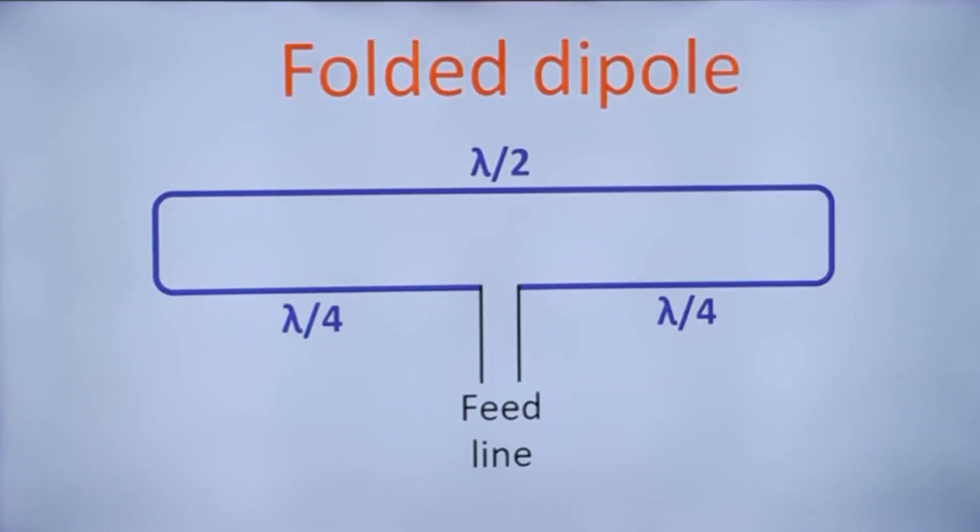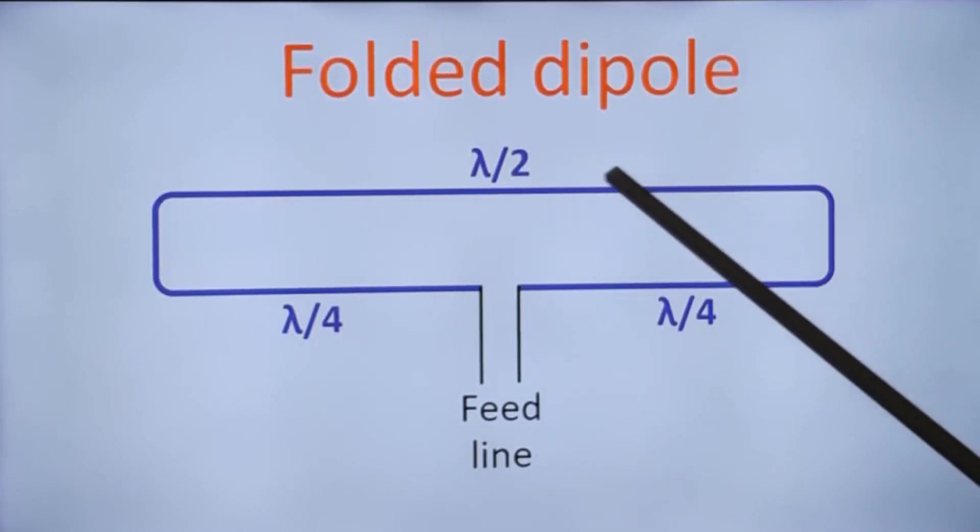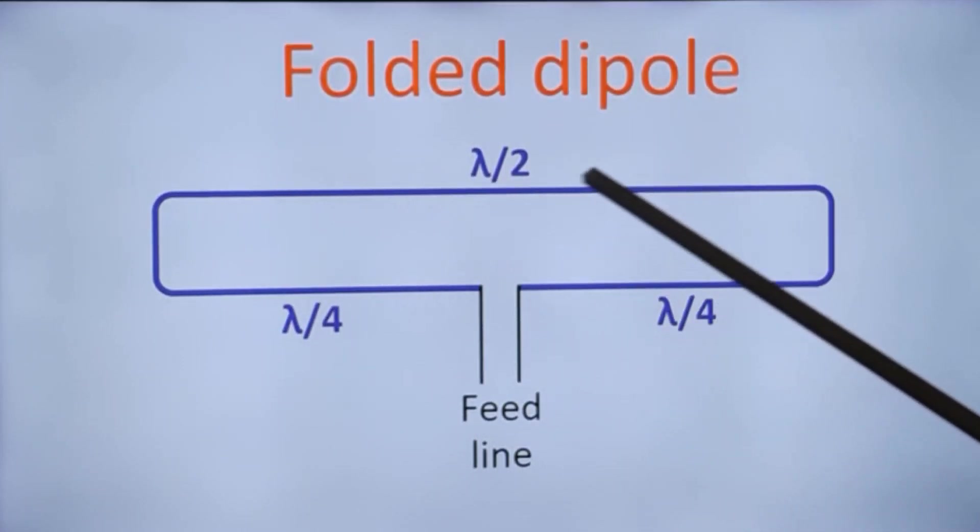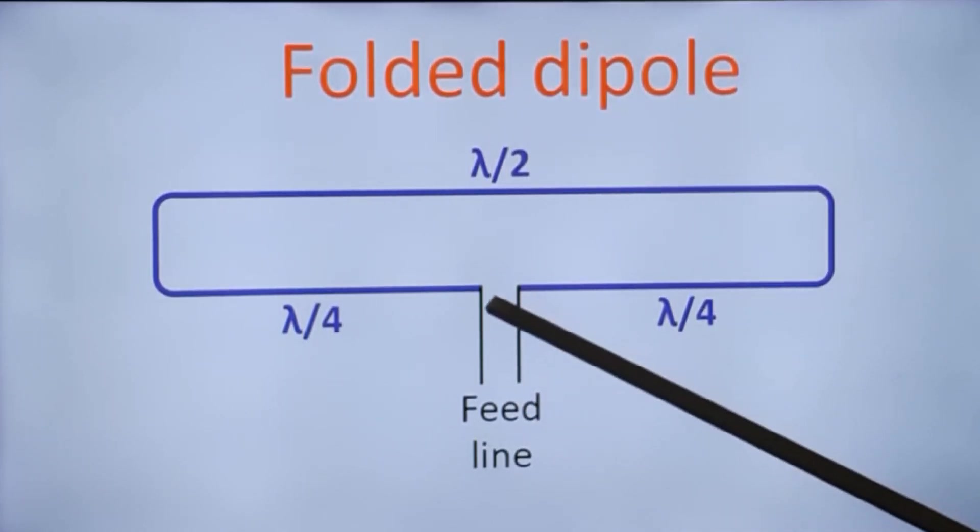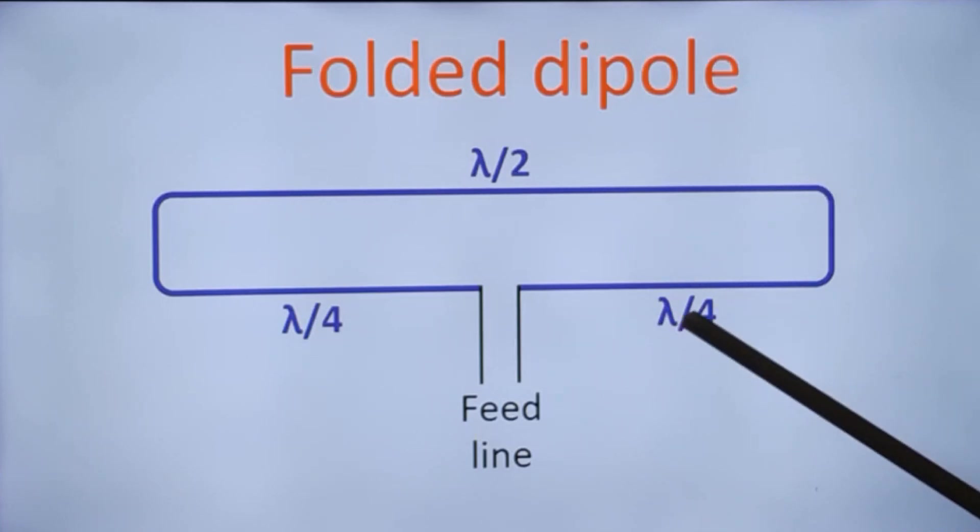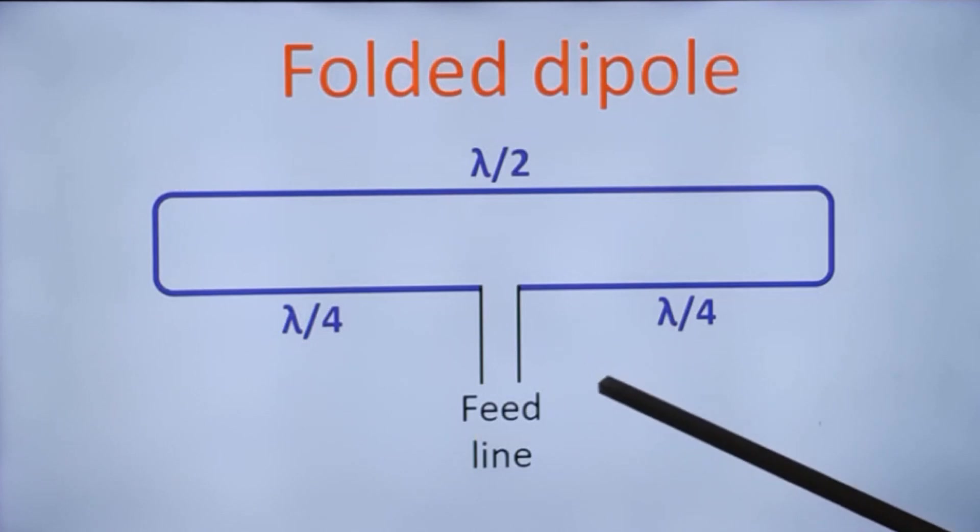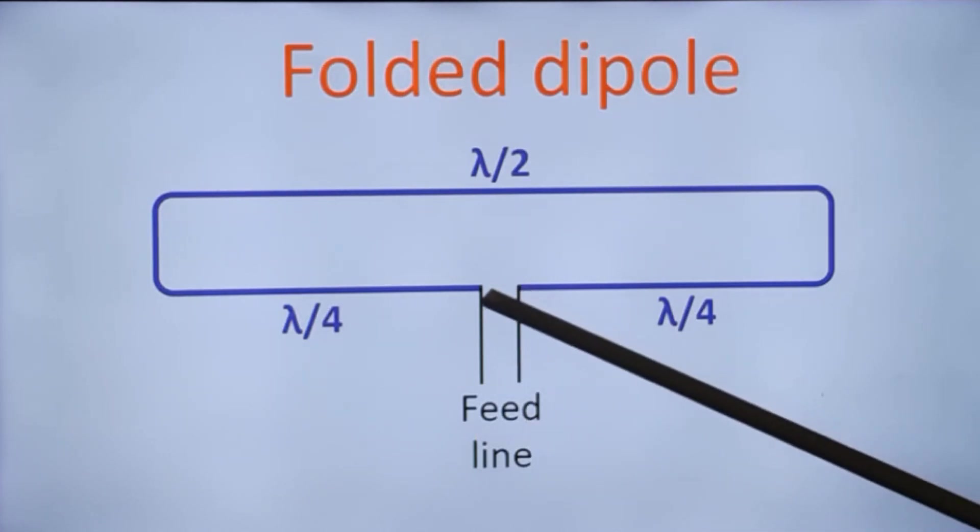This is the folded dipole which I mentioned as one of the possibilities for the driven element. Two quarter wave lengths with an additional half wave length added as a loop above it, and this is the feed line. This can also be used as a driven element for the Yagi. In the yester years before cable TV became very popular, a lot of beam antennas for television used to have folded dipoles. The feed point impedance will be around 300, that is 280 ohms.